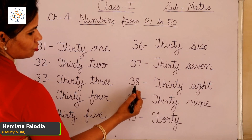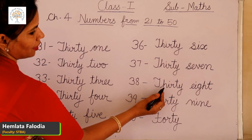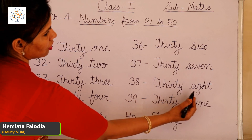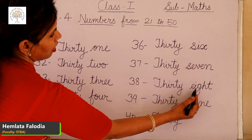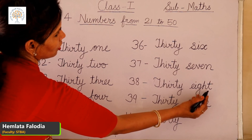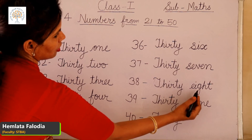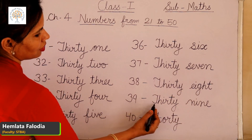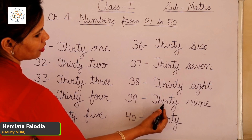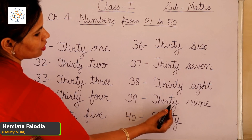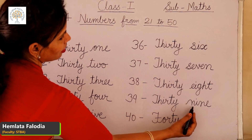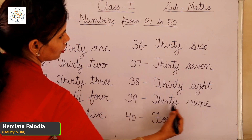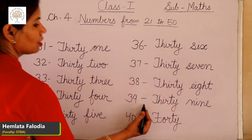38. T-H-I-R-T-Y, 30, E-I-G-H-T, 8. This is 38. Next, 39. T-H-I-R-T-Y, 30, N-I-N-E, 9. 30 plus 9 is 39.